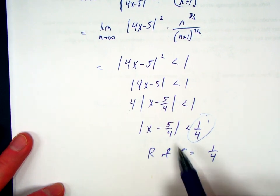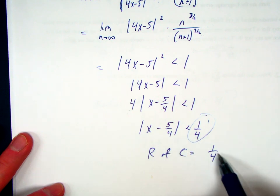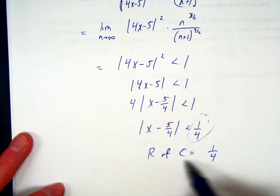1 fourth. And this series is centered at 5 fourths. So, if I want to find the interval convergence, I take the 5 fourths, and I add 1 fourth, and I subtract 1 fourth, and there is my interval. That is how I find the radius of convergence.